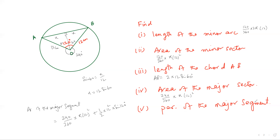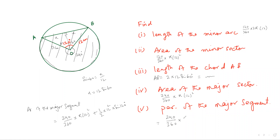Now at the end, we have to find the perimeter of the major segment. The major segment consists of this arc and this chord AB, and we have already got the length of the chord AB. If you want to go for the top marks, learn to use exact values. The perimeter of the major segment is going to be the major arc length — 240 over 360 into 2 pi r — plus 24 sine 60. This way you will get the perimeter of the major segment.